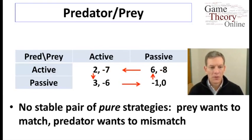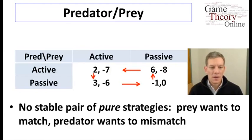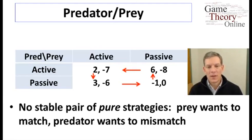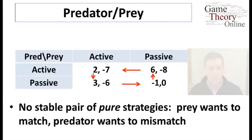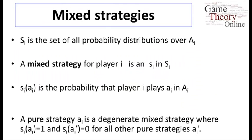The problem is that the prey wants to match what the Predator is doing, and the Predator wants to mismatch. So in this kind of game we don't see any steady points. This brings us to mixed strategy equilibria.